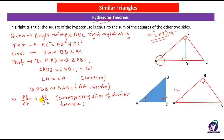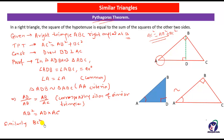Cross-multiplying, we get AB² = AD × AC. Similarly, if we take triangle BDC and the main triangle ABC, we can prove that BC² = DC × AC.